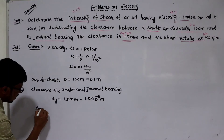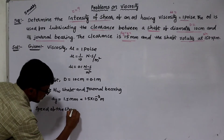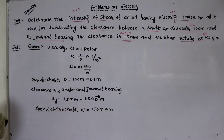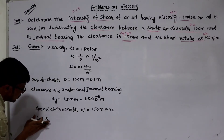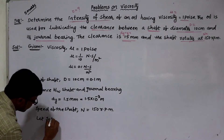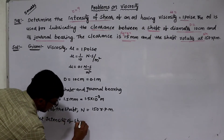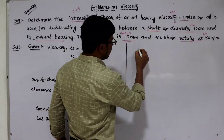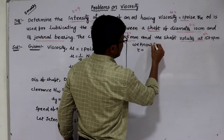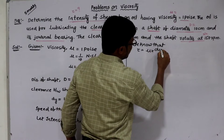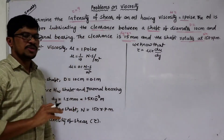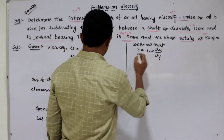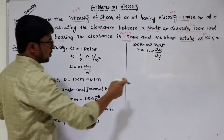The speed of the shaft is capital N equal to 150 rotations per minute. We need to find the intensity of shear stress, tau. We know that tau equals mu times du by dy. Checking what data is missing: mu is given, dy is given, but du is not known and needs to be calculated before substituting into this equation.